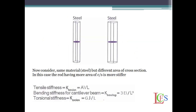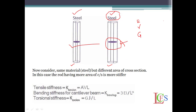Next, let us consider the same material — steel and steel — where Young's modulus, Poisson's ratio, and modulus of rigidity are all the same. Then which one is more stiffer? The one that is comparatively larger, because the cross section of that body is more comparatively. So it has more stiffness. This body is more stiffer because stiffness depends on both geometry and material properties.